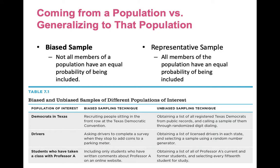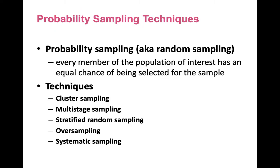In the table, you can see that you could use either a biased or an unbiased technique in order to obtain a sample from a population of interest. In order to get an unbiased sample, what we want to do is use a probability sampling technique, otherwise known as random sampling. This is where every member of a population of interest has an equal chance of being selected. There are a number of different kinds of random sampling, and we're going to learn about five different techniques.